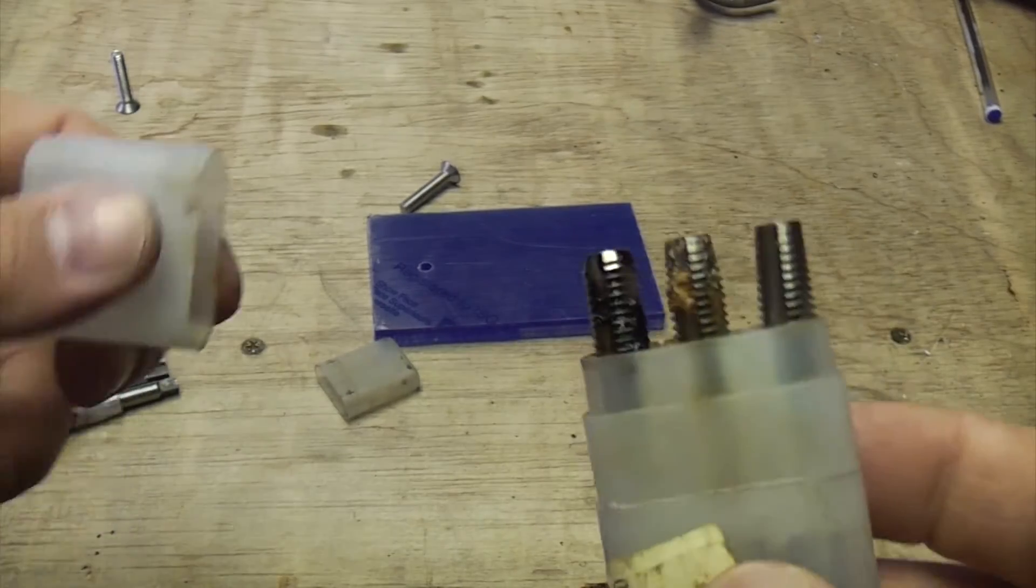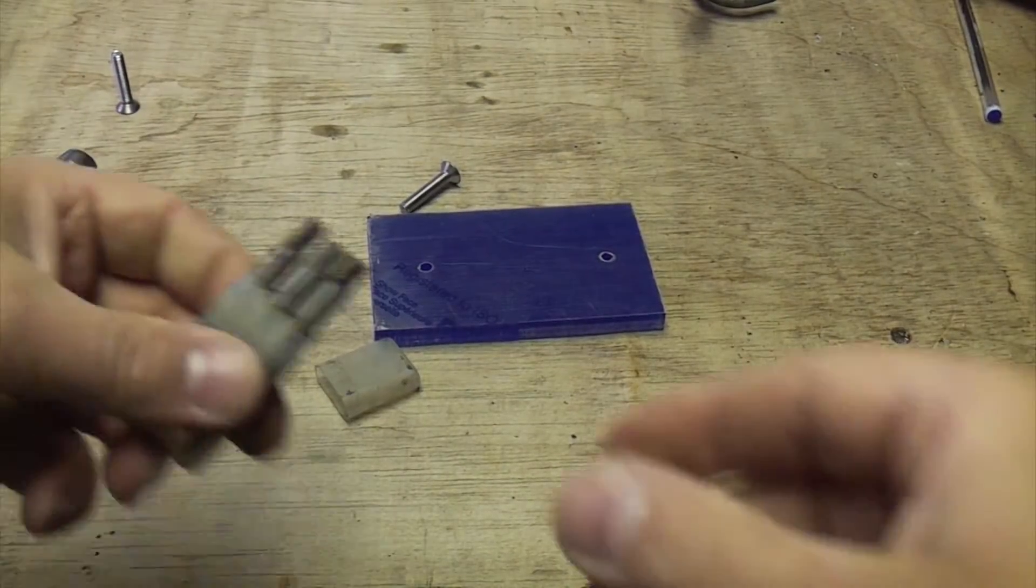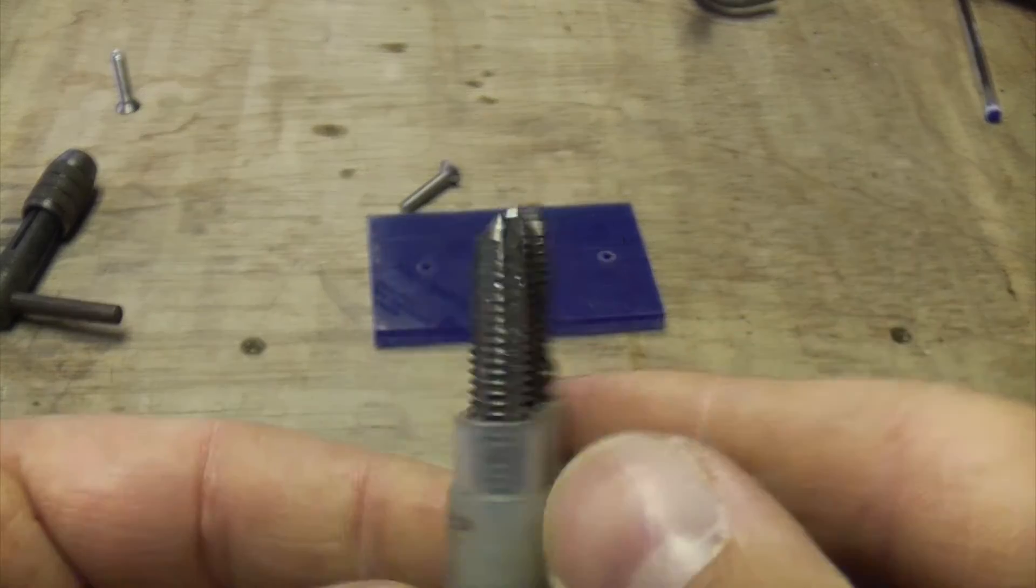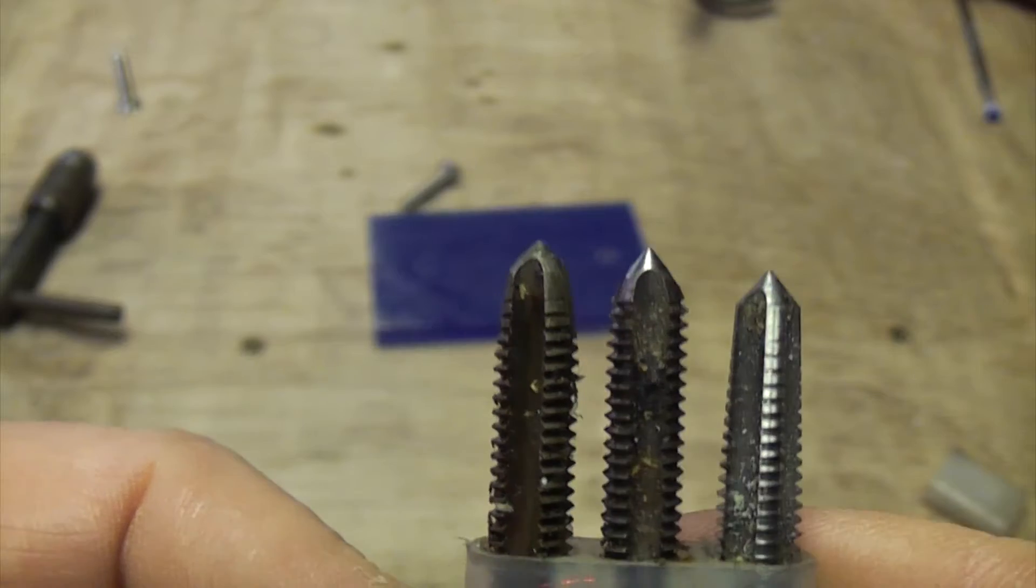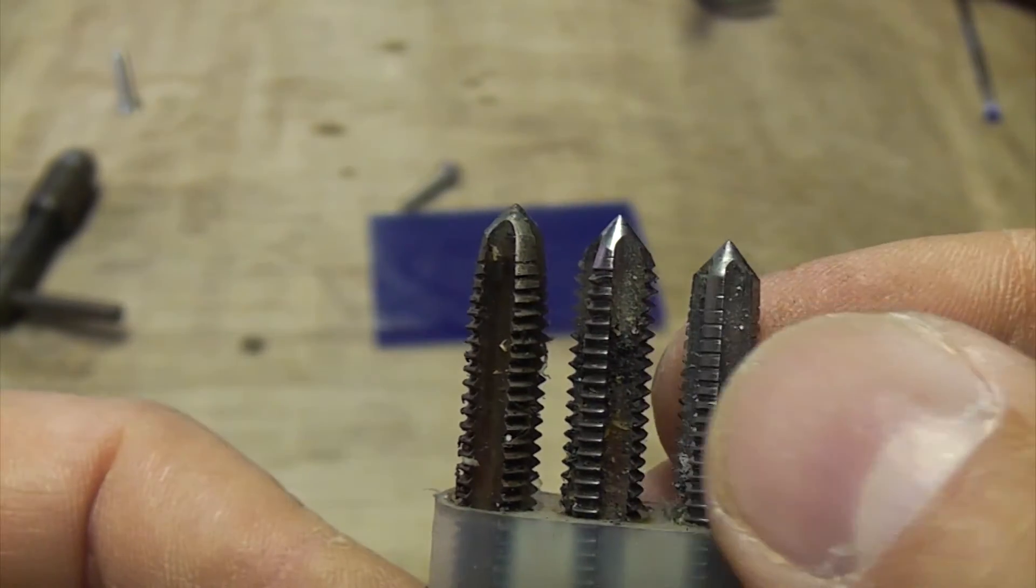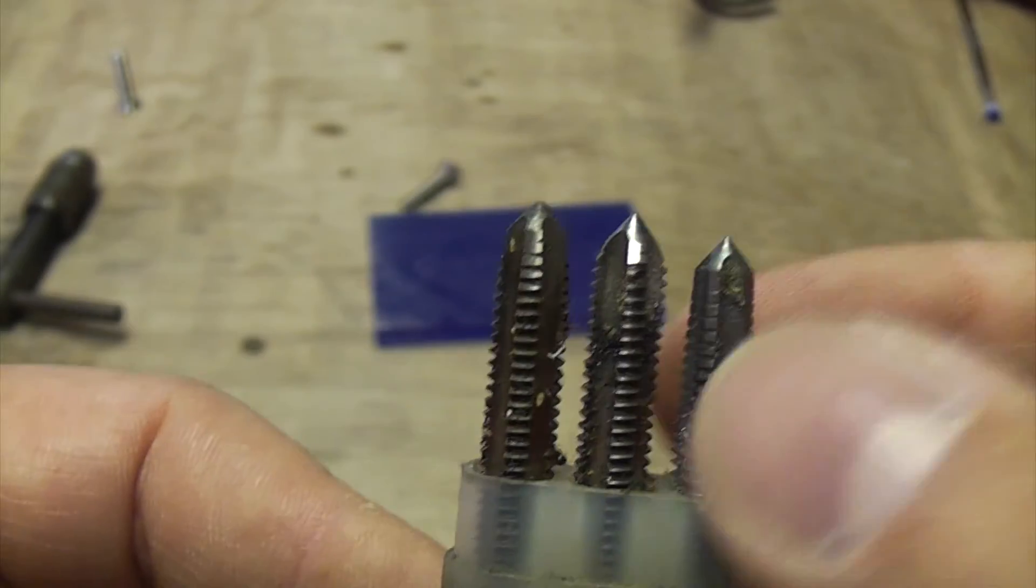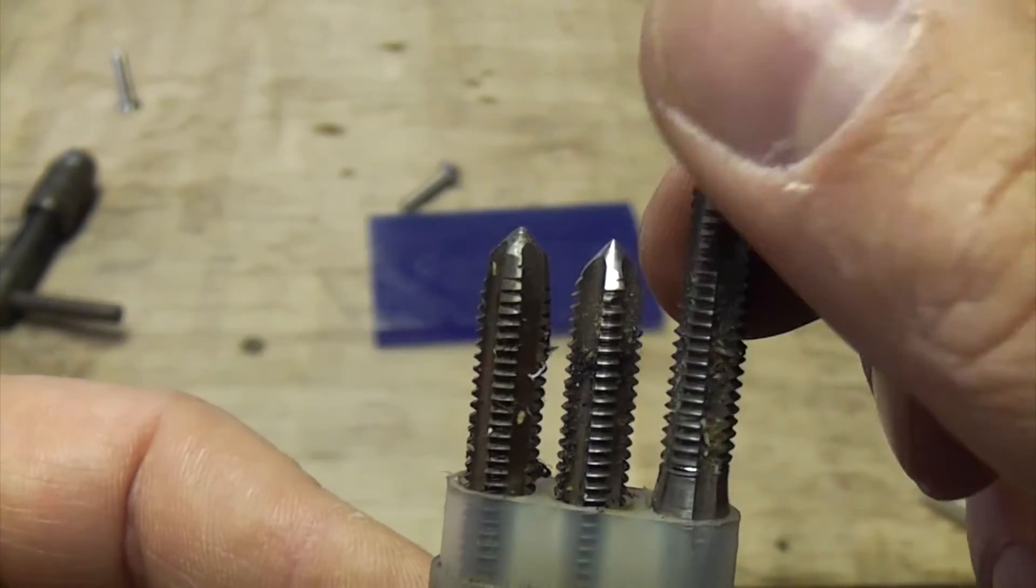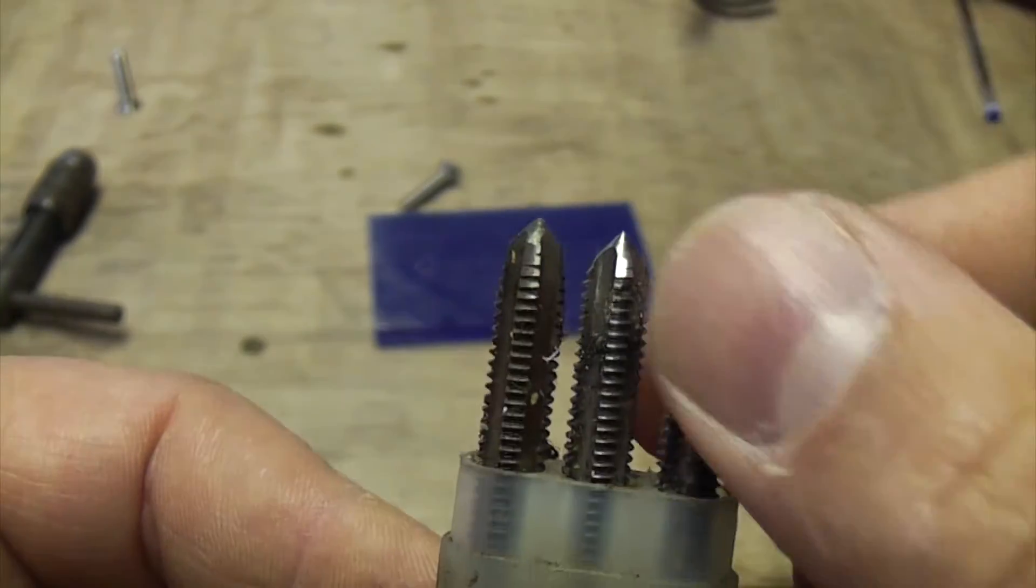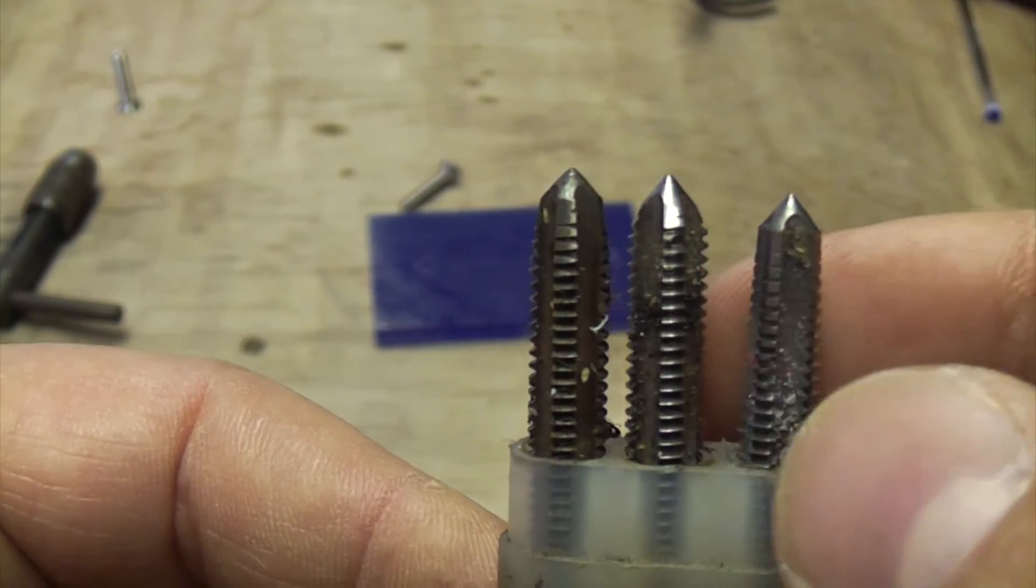But we won't actually be using those because we're not tapping a blind hole—we're going to be using these. As you can see, they've come in a set of three. That's the one you'd use first because it's got the biggest taper on it. But because we're going straight through this material, we only need to use that one because we can just go straight through with that and that'll put a perfectly acceptable thread in the perspex for us.